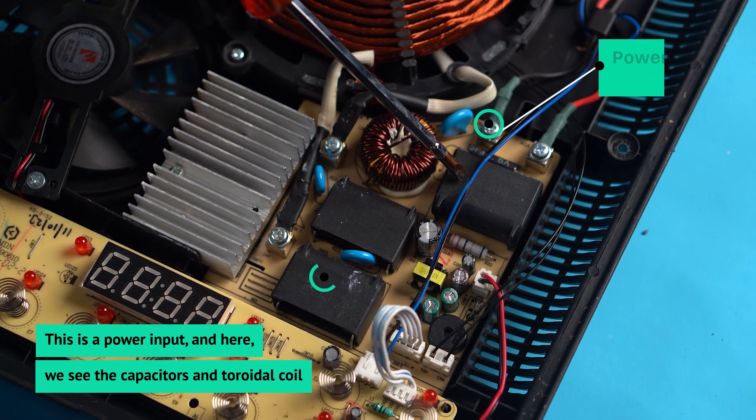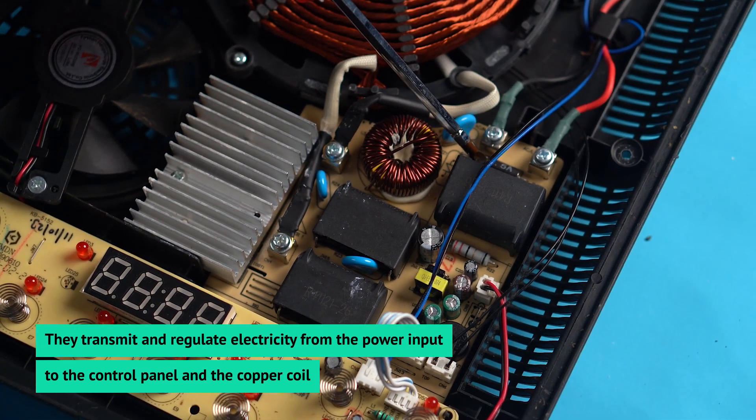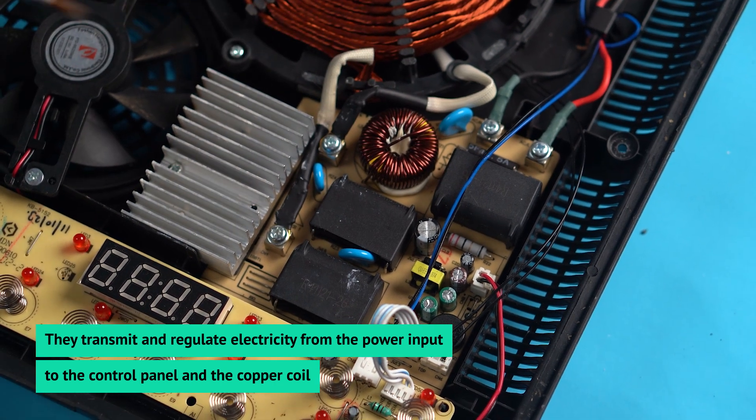This is the power input and here we see the capacitors and toroidal coil. They transmit and regulate electricity from the power input to the control panel and the copper coil.